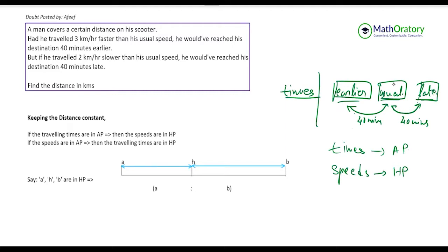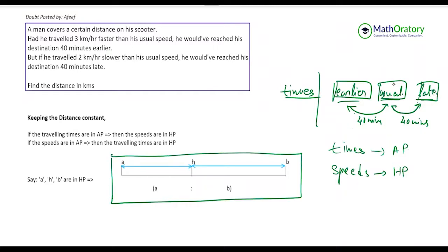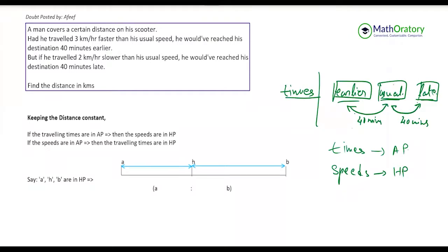Now, what is the interesting property of HP and how does it help us? If you have three numbers a, h, and b in HP, the differences between consecutive terms — that is, (a − h) and (h − b) — will be in the ratio a : b. That is the key property of an HP series.